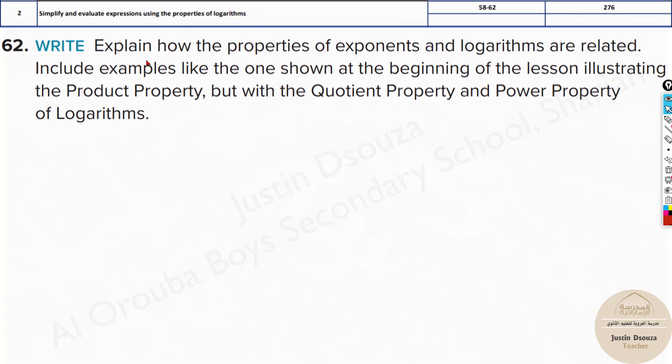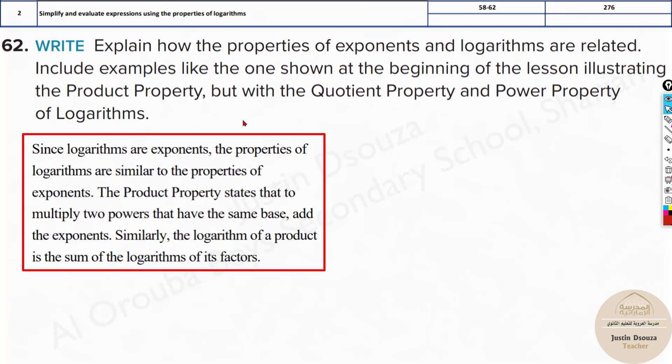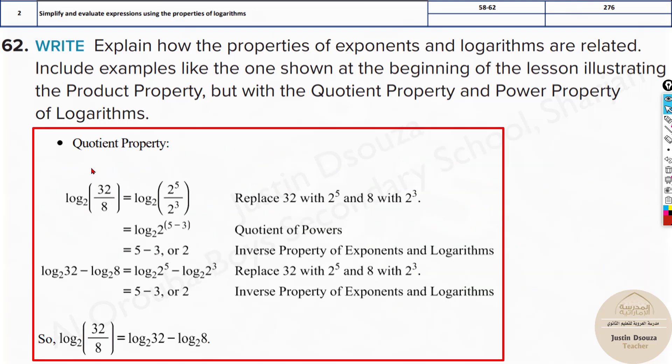We have a proving problem. We need to explain how properties of exponents and logs are related with examples like the first problem. We will just look through this. The quotient property - we have two terms divided. 32 can be written as 2⁵ and 8 can be written as 2³. Then we can simplify this log base 2, 2 to the power. You can just put in the calculator and solve it up, but I'll just tell you what has happened.